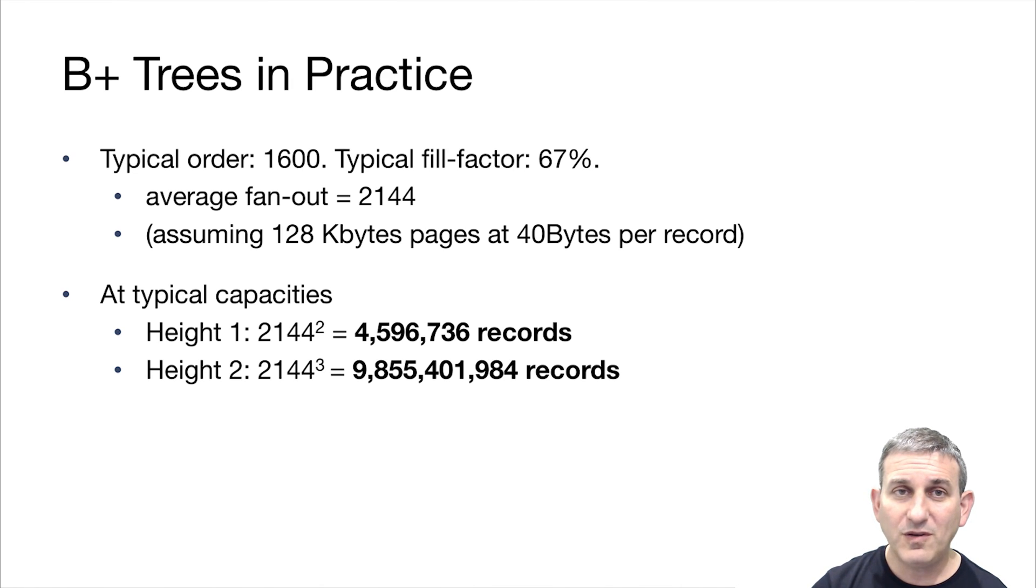And with typical capacities, then height 1 is 2144 squared. So that's the root and then that many entries per leaf. That's over four and a half million records in a height 1 B-plus tree. In a height 2 B-plus tree, it's almost 10 billion records. So you can see that B-plus trees can be very short and it holds enormous numbers of records and our paths to the leaves of these B-plus trees will remain very short. So it's a very efficient way to get access to records within a very big file.